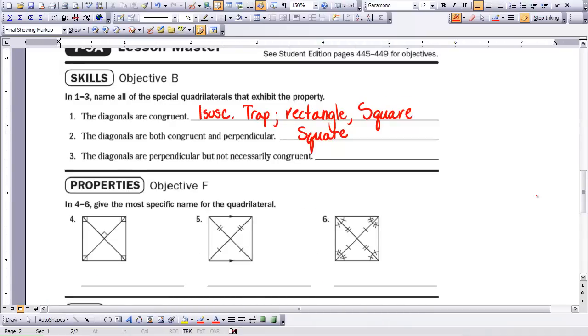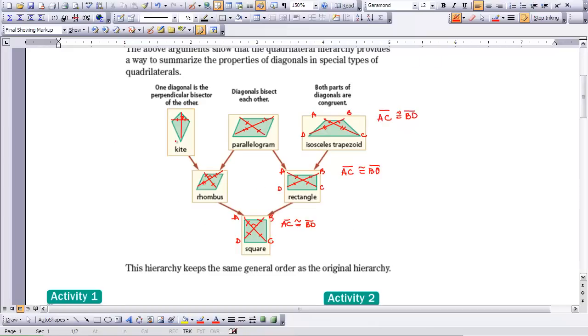Number three says the diagonals are perpendicular but not necessarily congruent. So if you look down on the side where it talks about the perpendicular bisectors, this row here, the kite and the rhombus, are perpendicular bisectors.